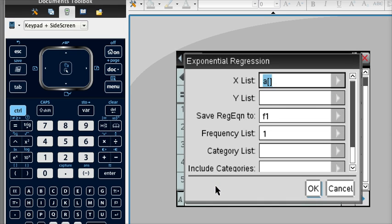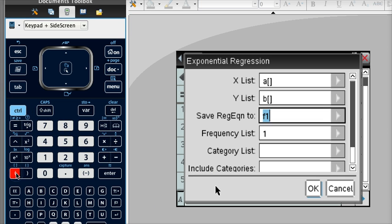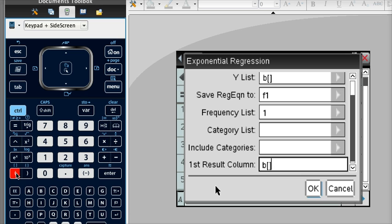My x list is in A. And then my y list is actually in B. So we have to fix that. And then I want to tell the calculator to put my answer in column C. And you hit OK.